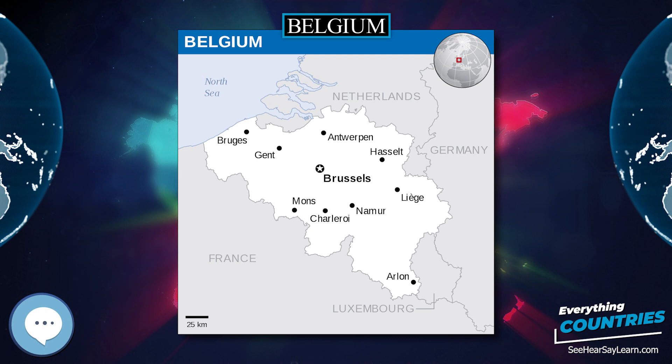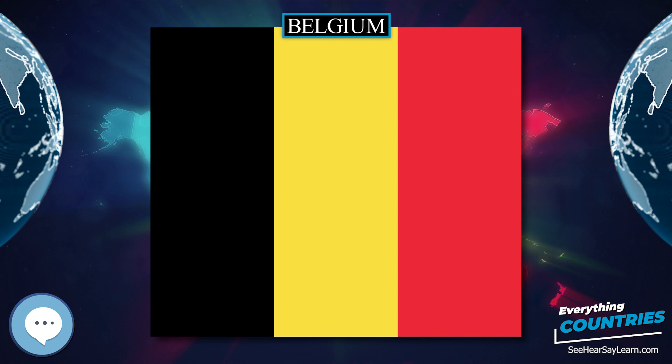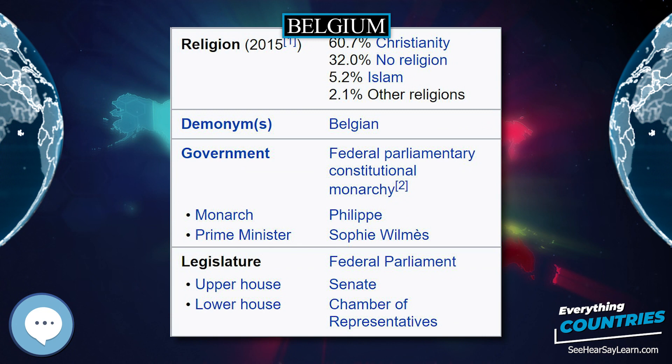Belgium, officially the Kingdom of Belgium, is a sovereign state in Western Europe. It is bordered by the Netherlands to the north, Germany to the east, Luxembourg to the southeast, France to the southwest, and the North Sea to the northwest. It covers an area of 30,688 km² and has a population of more than 11.4 million.